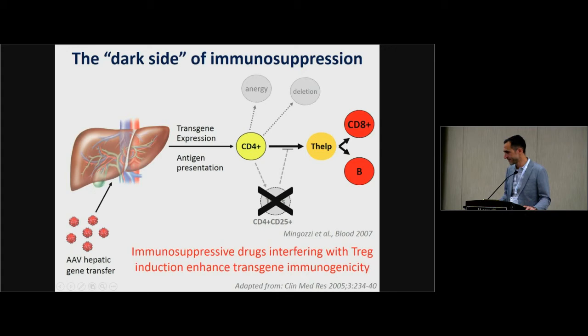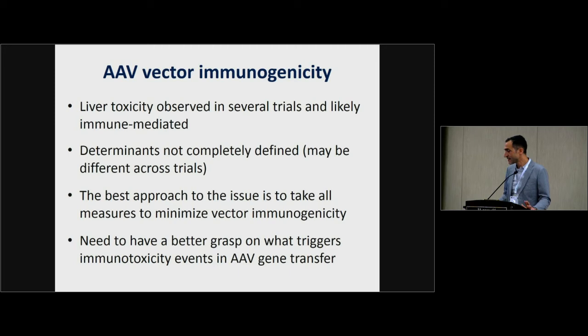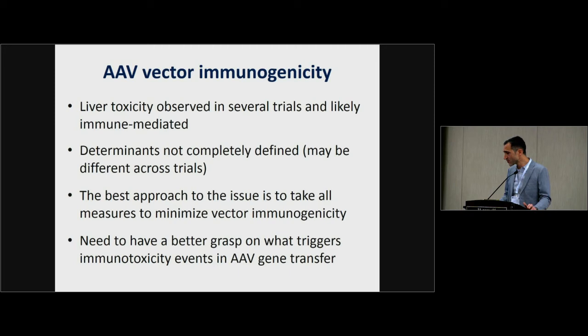In summary on AAV vector immunogenicity: liver toxicity observed in several trials is likely T-cell mediated, though the determinants are not completely defined and may differ across trials. The best approach is to do everything you can to minimize vector immunogenicity. Never stop studying these responses — this is what will help us gain a better understanding of what triggers immune responses in the context of AAV gene therapy.